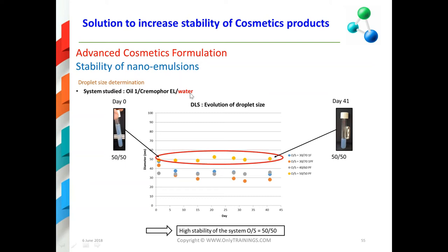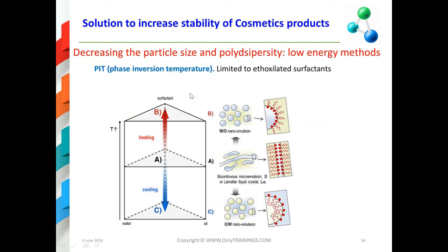This example is done with oils, cream of OEL, and water. To obtain this kind of emulsion such as a nano emulsion, you can use high-energy methods such as ultraturax, but you are not sure to form this kind of dispersion. Another method is low-energy methods.